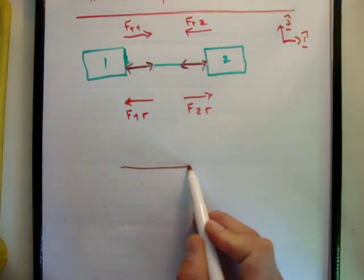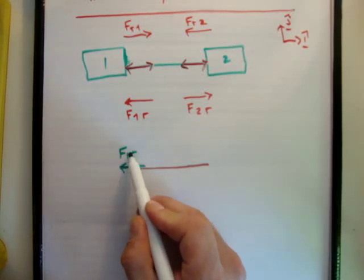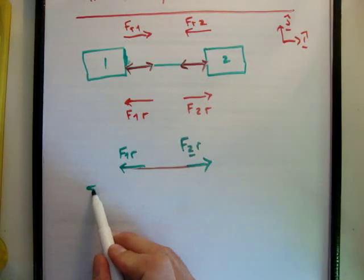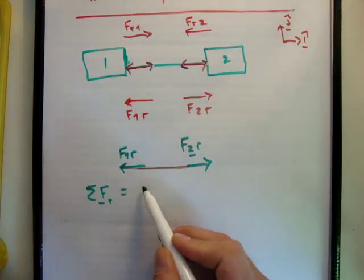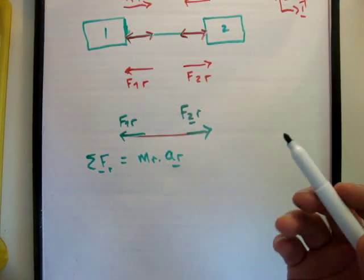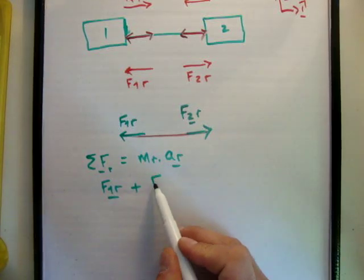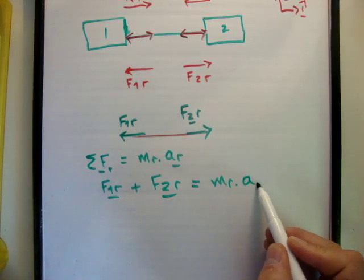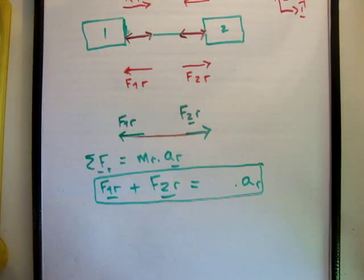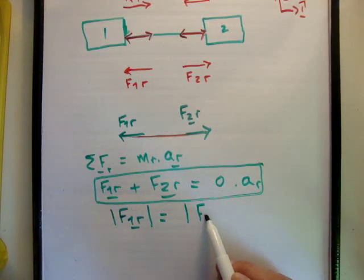Looking at what's happening in the rope: the two forces acting on it are the force of block one on the rope (F1R) going one way, and the force of block two on the rope (F2R) going the other way. Applying Newton's second law, the sum of forces on the rope equals the mass of the rope times its acceleration. If the mass of the rope is zero, then the magnitude of F1R equals the magnitude of F2R.